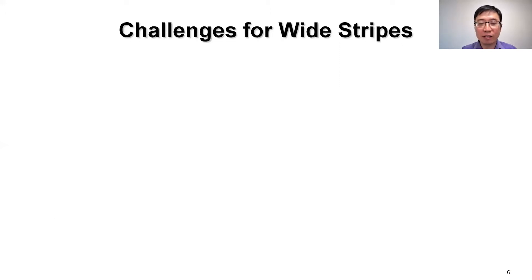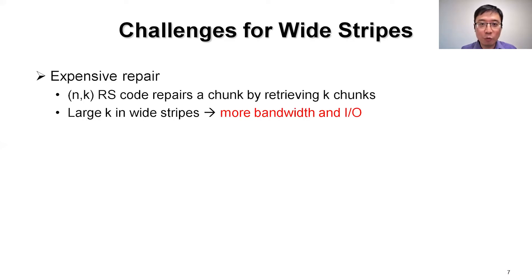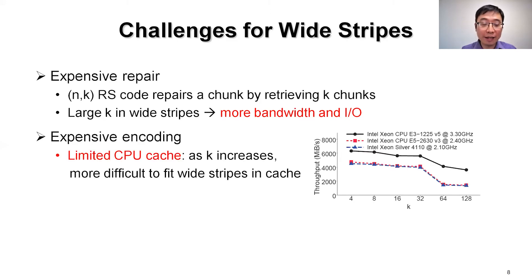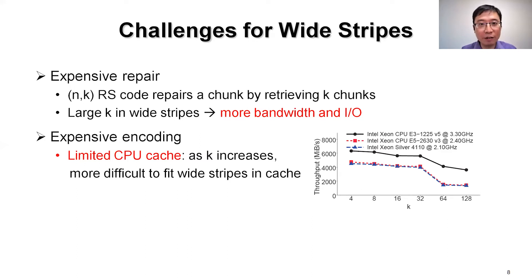In spite of the promises of wide stripes, here come the challenges. The first one is the well-known repair problem of erasure coding — repairing a chunk needs retrieving k chunks. For wide stripes that have a large k, it will incur more repair bandwidth and I/O cost. The second challenge is the expensive encoding for wide stripes on a single node. The single-node encoding performance is significantly degraded as k increases, because it becomes more difficult to fit wide stripes in the single-node CPU cache.